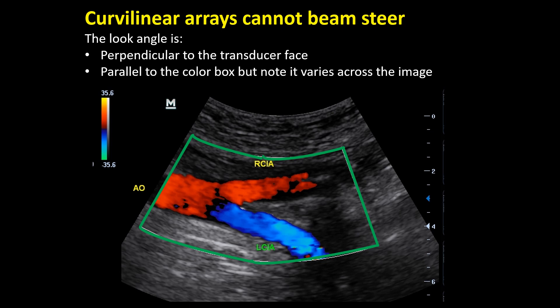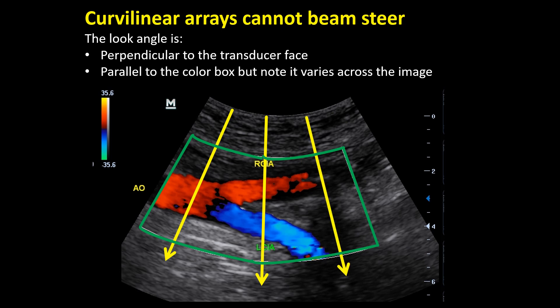Perhaps a little bit more complicated in a curvilinear array — a curvilinear array cannot beam steer. The look angle is always going to be perpendicular to the transducer face. But similar to a linear array, it remains parallel to the color box. However, note how this varies across the image.